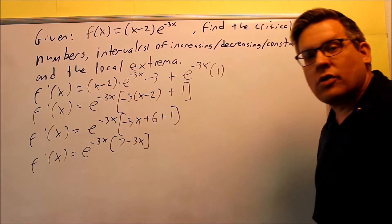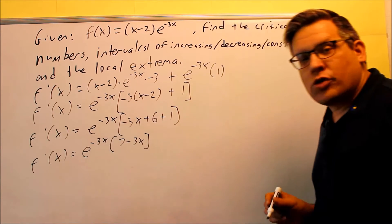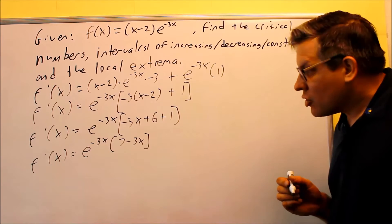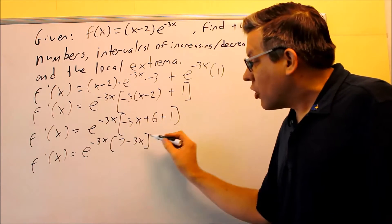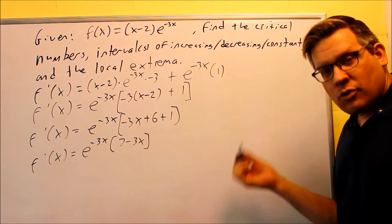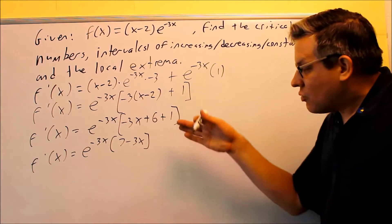So this is going to be the derivative function that we're going to be working with. Now we look for where the derivative is undefined because that could be a possibility for finding one of our critical numbers. But in this case, this is going to be a smooth curve and this is as well. So there's no places where I'm going to be dividing by 0 or square root of negative numbers. So therefore, we know that it's differentiable.